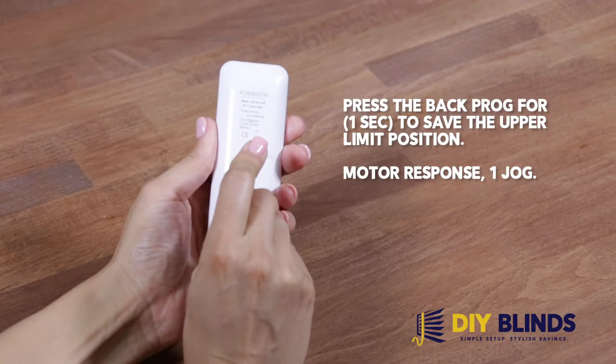Press the back prog button for 1 second to save the upper limit position. Motor responds with 1 jog.